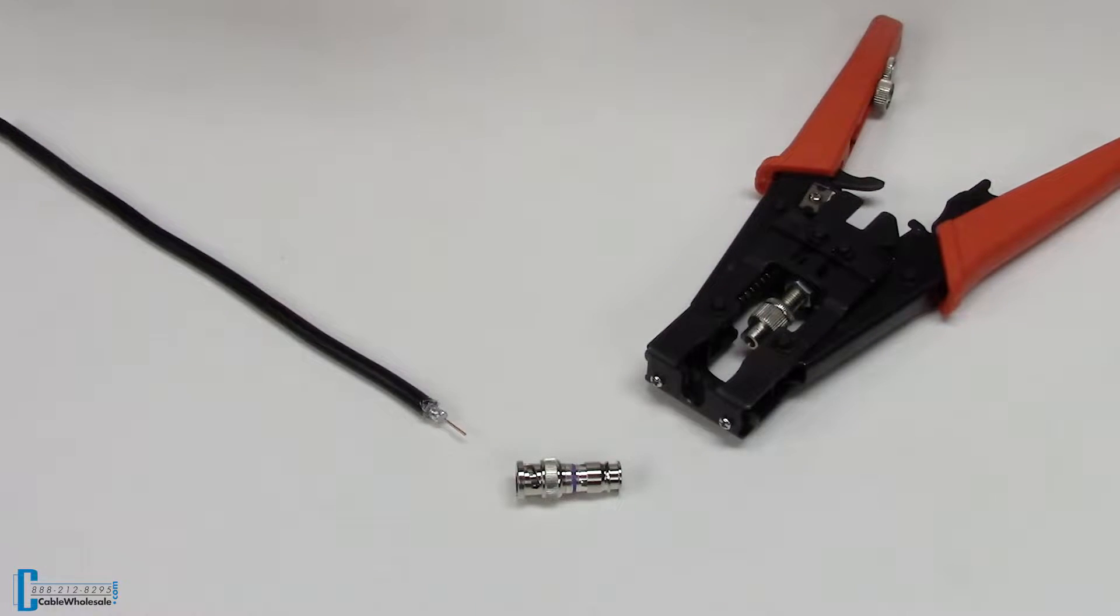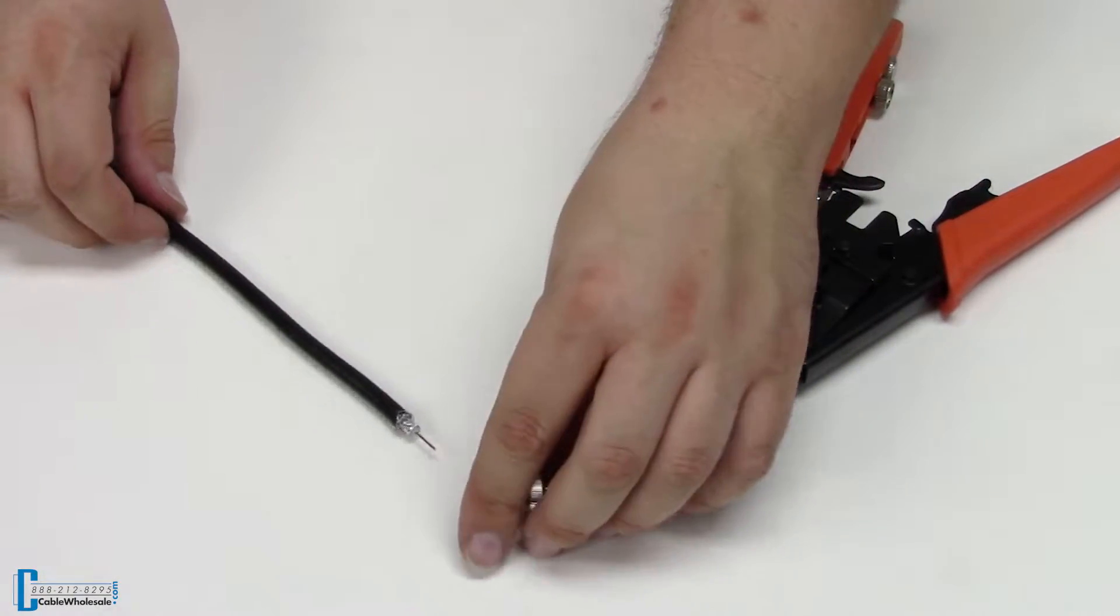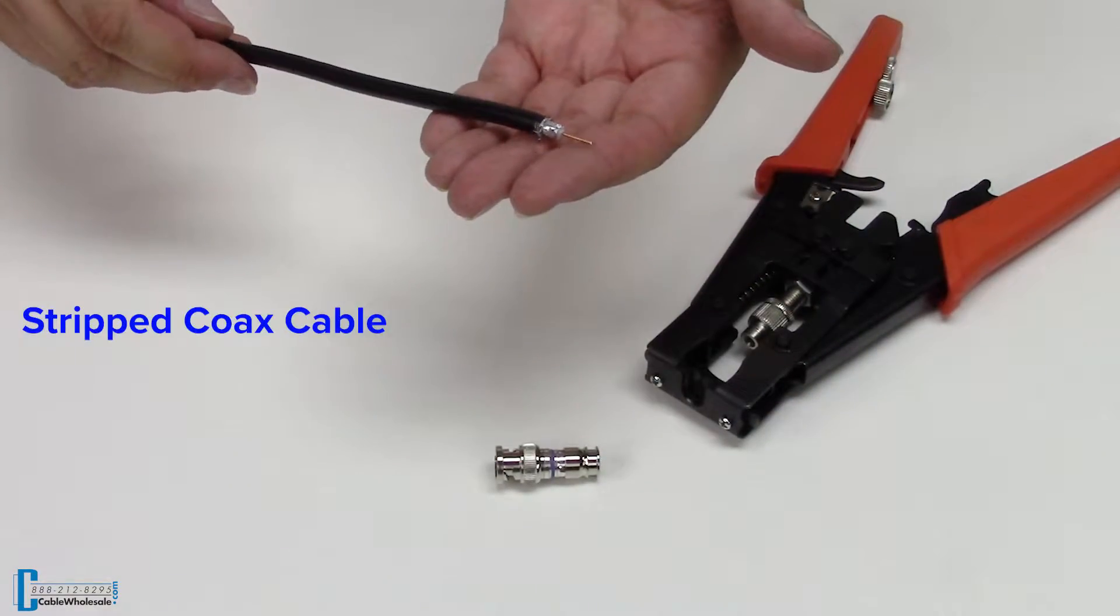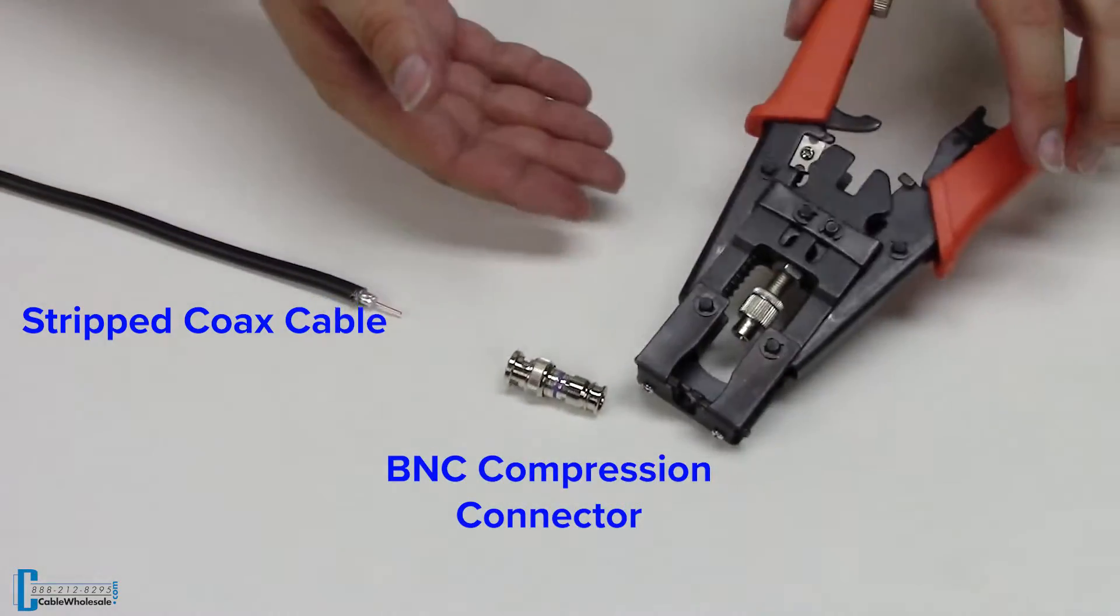Today we're going to have a DIY video looking at BNC compression connections. You'll need a freshly stripped coax cable, a BNC compression connector, and a compression tool.